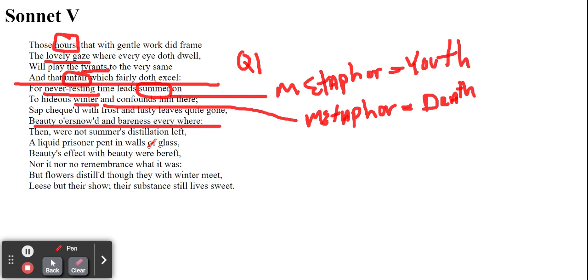And all those things of summer that are beautiful, the lusty leaves are going to be gone. The things that are alive are going to be dead. The barrenness everywhere. Beauty over snowed. So this is Q2 here. And Q2 is basically cautionary.